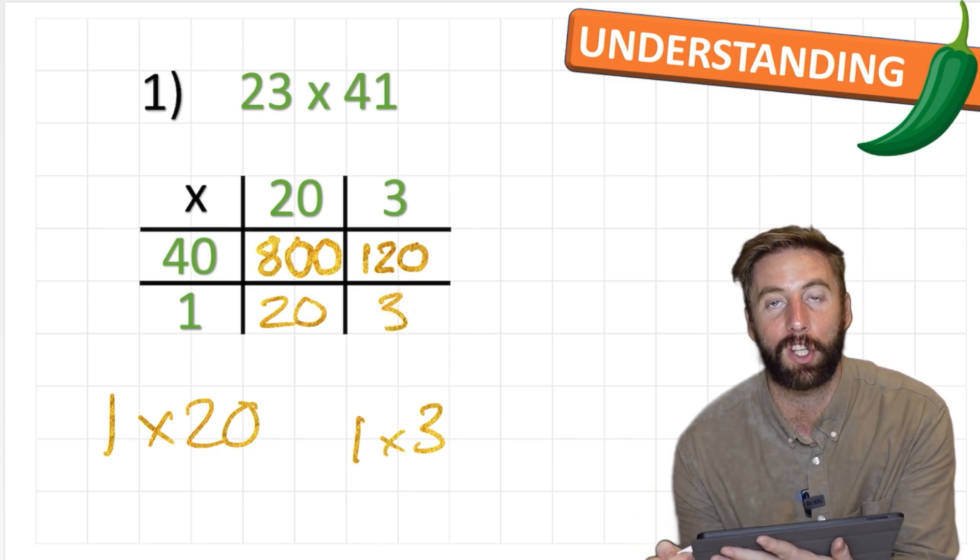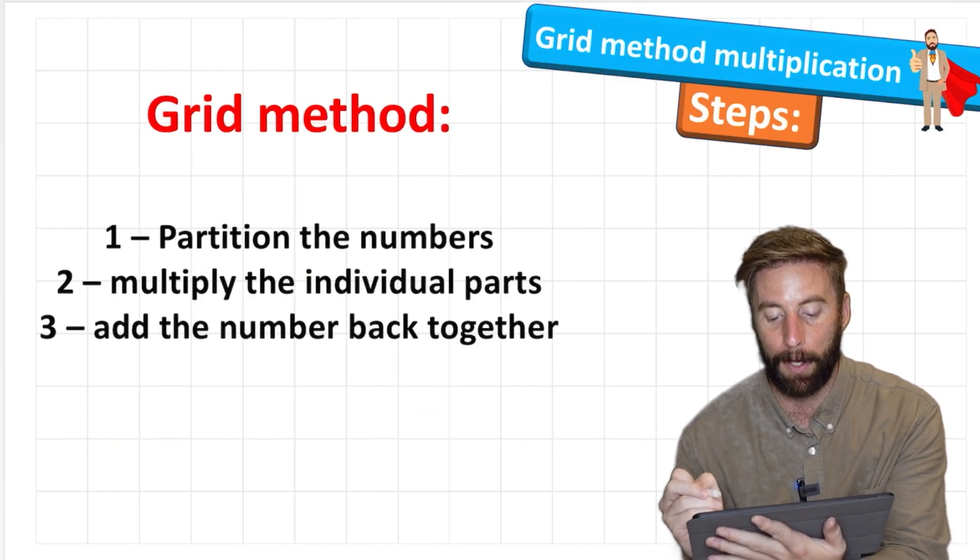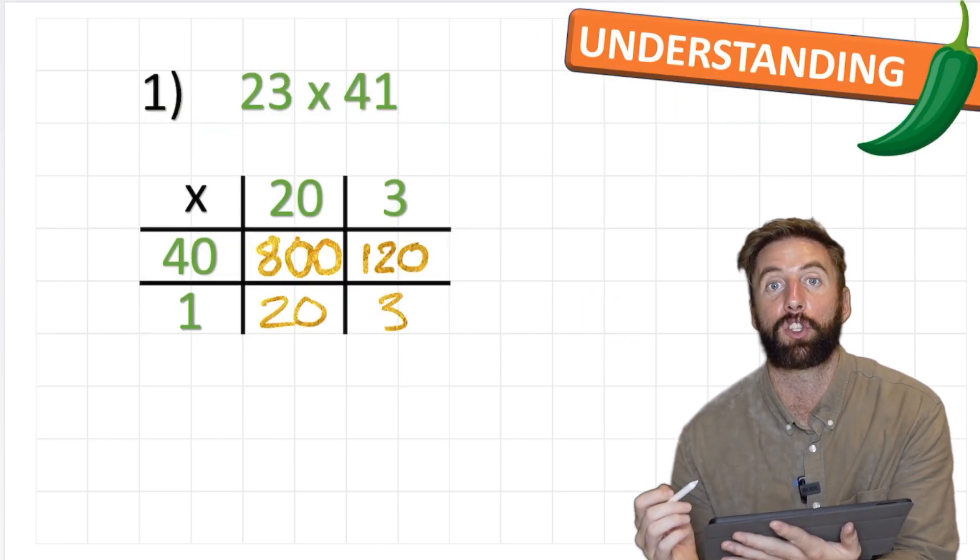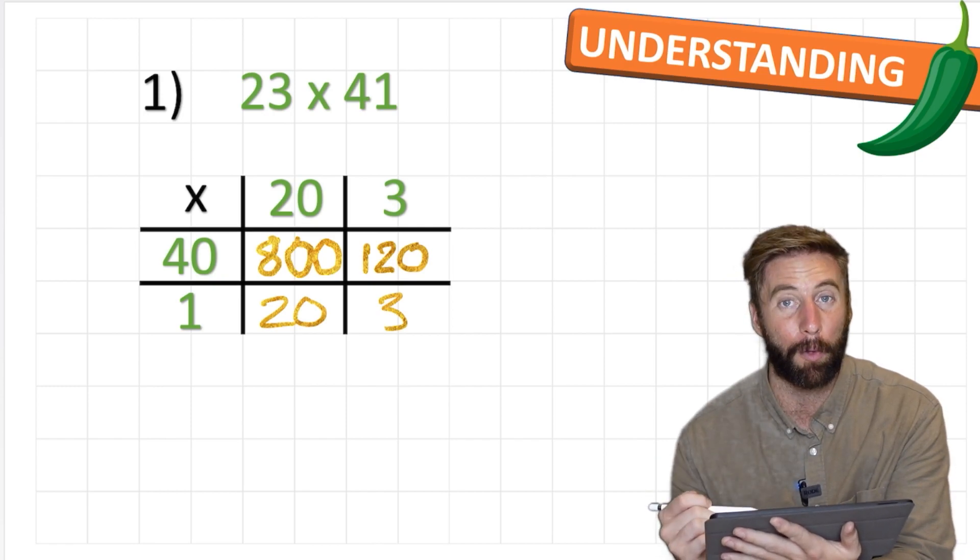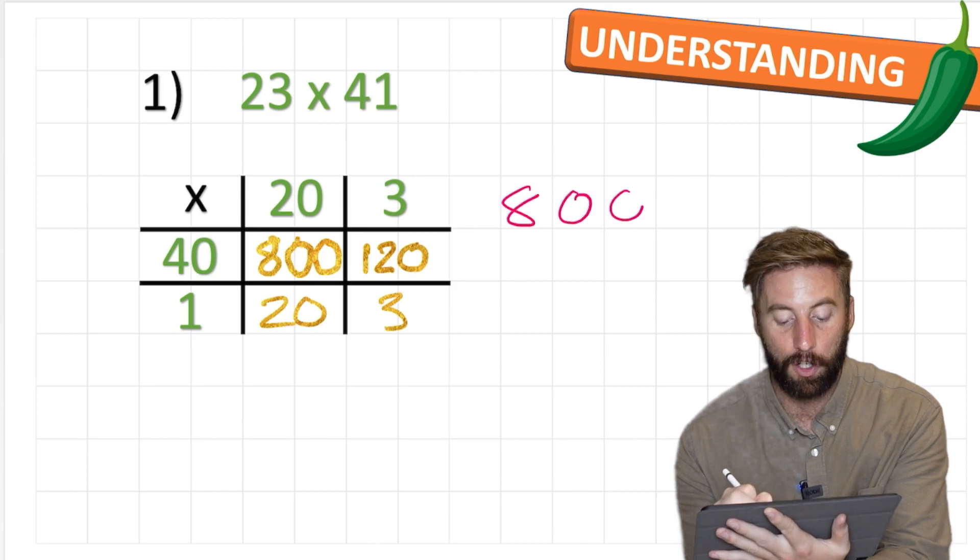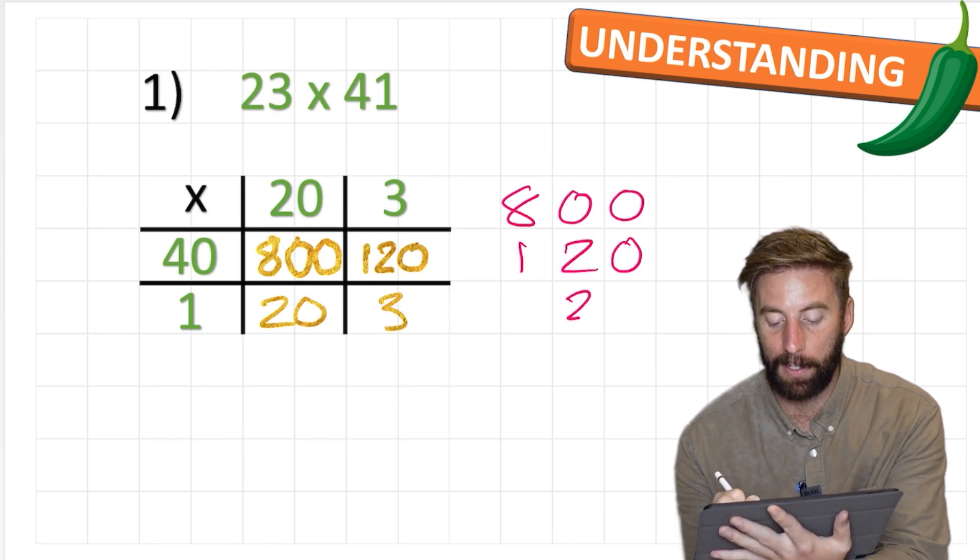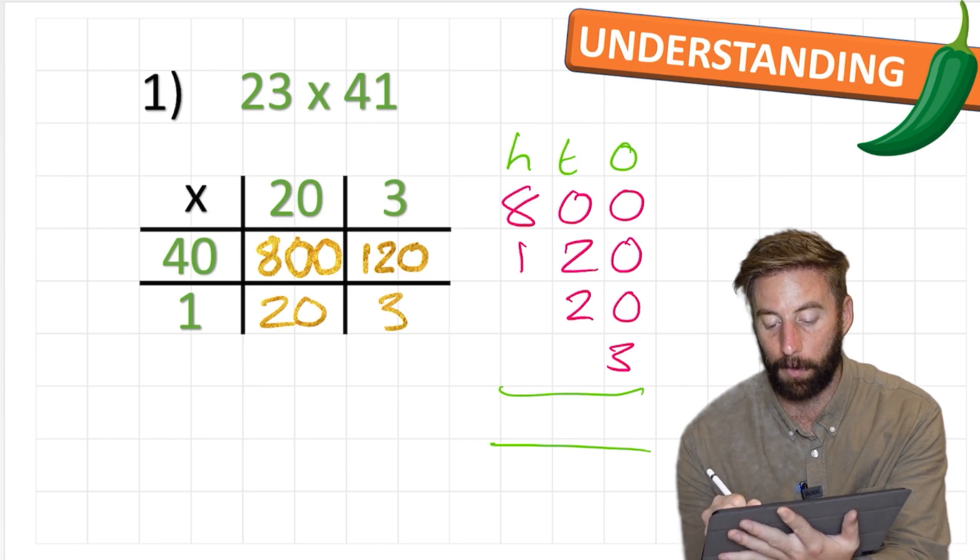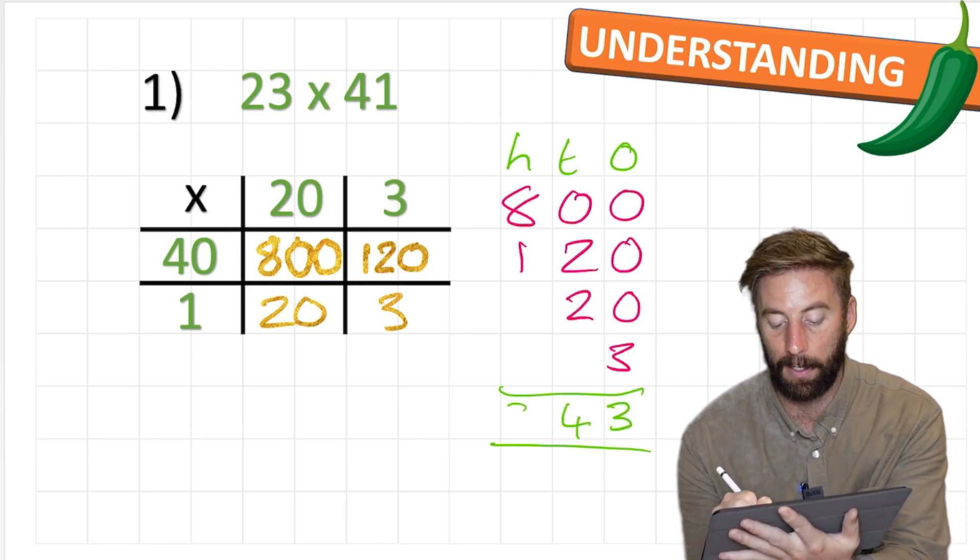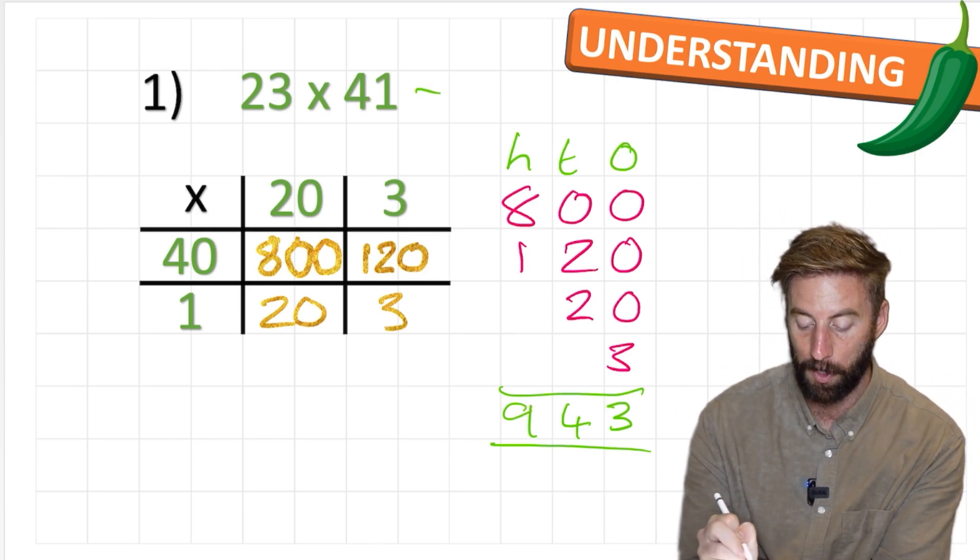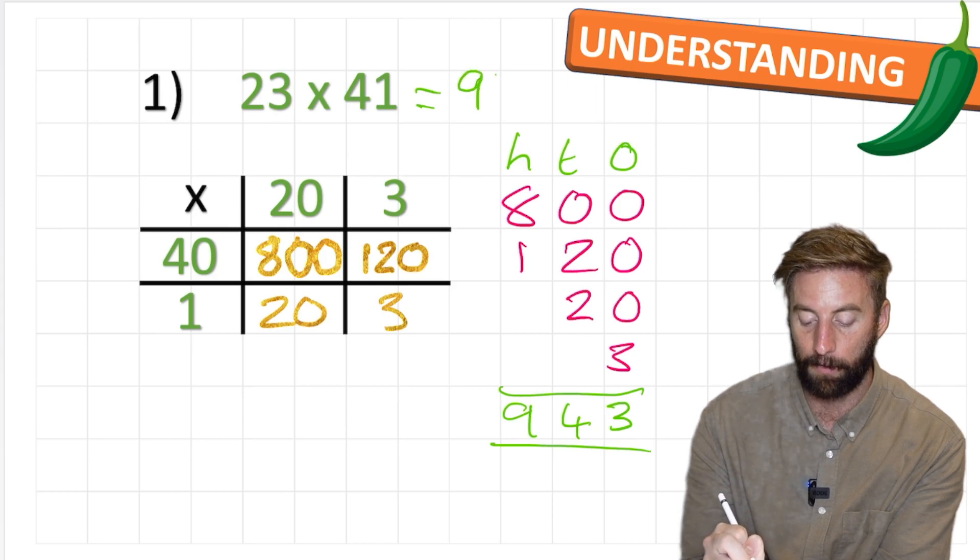But am I finished? No. Because if I look back at my steps, I now need to do step 3 which is to add these numbers back together. I need to add my 800 to my 120, my 20 and my 3. And here we go: 0, 0, 0, and 3 equals 3. 2 and 2 is 4. 8 and 1 is 9. So my answer to 23 times 41 equals 943.